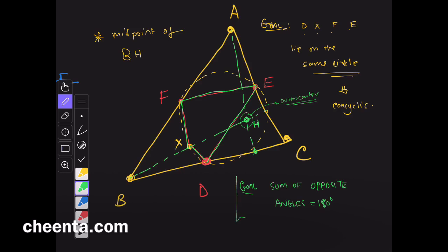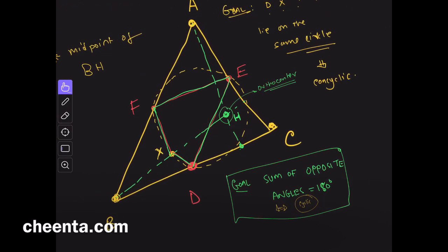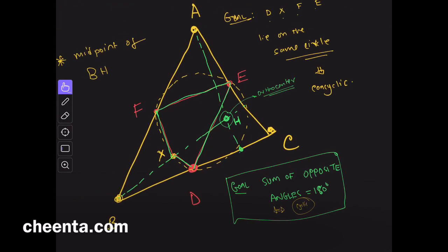Sum of opposite angles is equal to 180 degree. Because we know this, that if in a quadrilateral, sum of opposite angles is 180 degree, then that quadrilateral is cyclic. So, this means the quadrilateral is cyclic or the four points lie on the same circle. This is the tool that we will use.